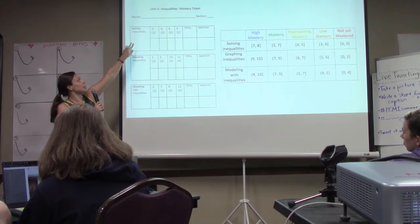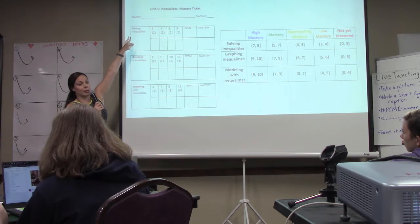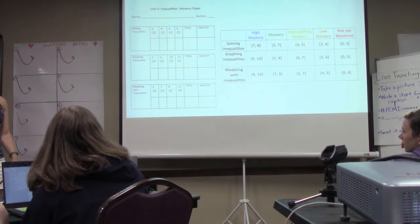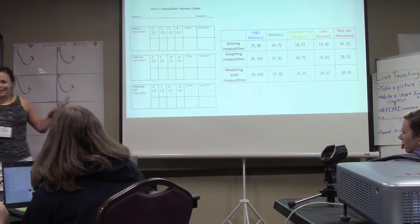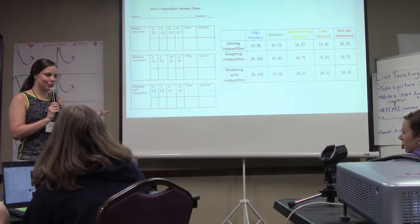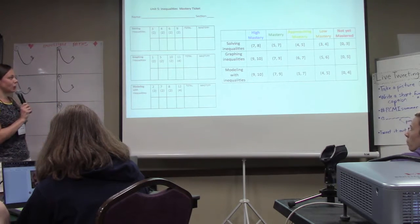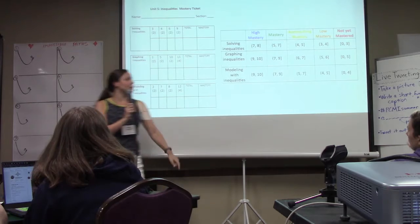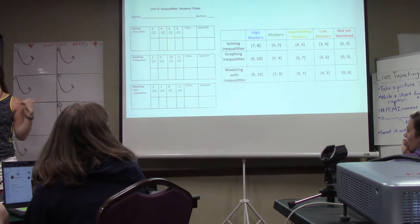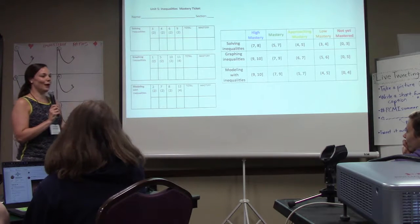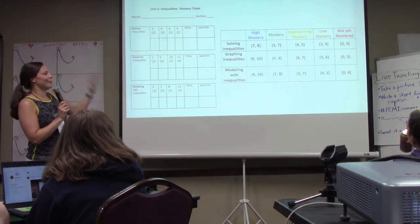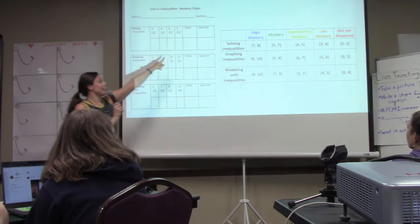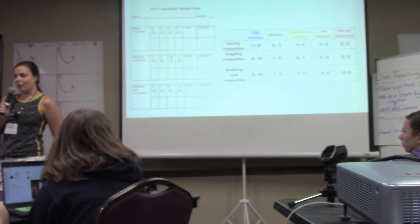On question three, for example, it was a solving inequalities question worth two points, and they write the number of points they got right there. This is a little more involved than I would like to make mastery grading — it was happening at my school before I got there and got passed along to me. Students learned about interval notation during the inequalities unit, so that was a fun way to incorporate it into their actual tracking. Whatever number of points they got for a topic, they write down the mastery level corresponding to it.